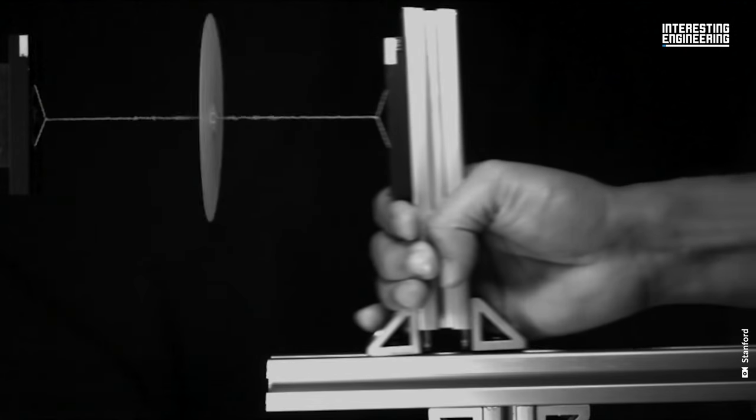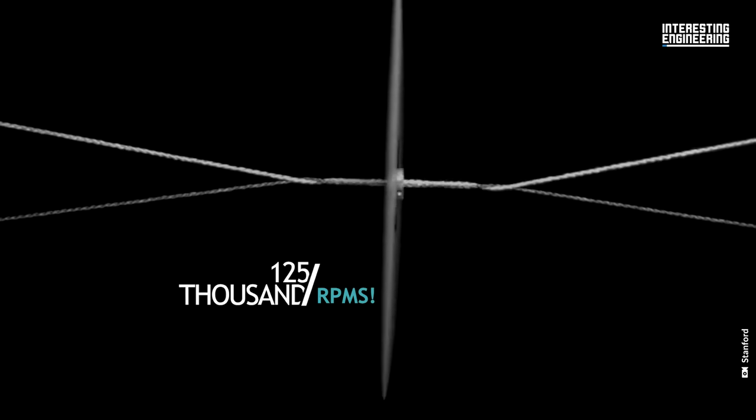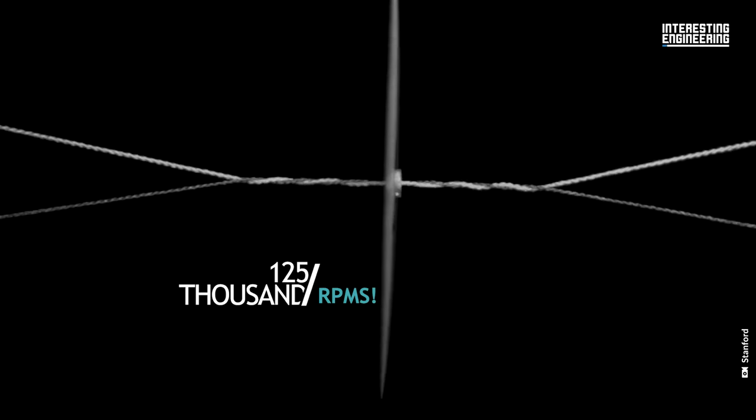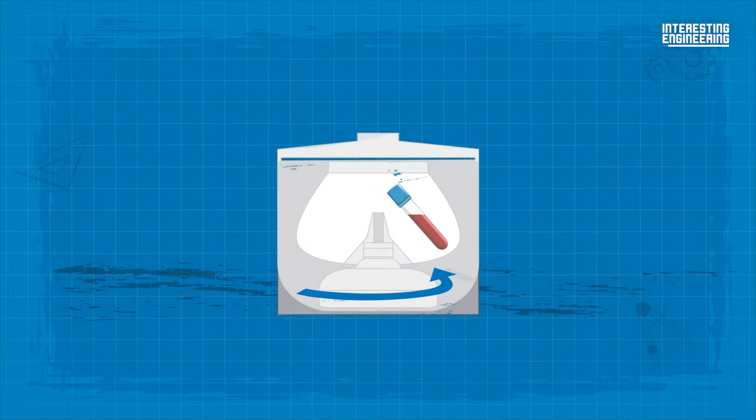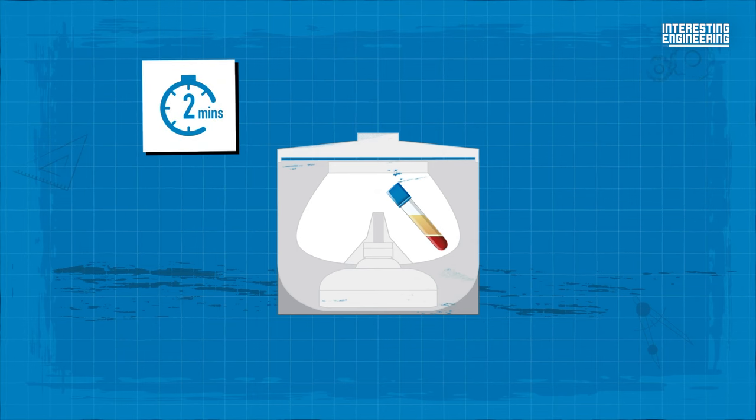A human-powered blood centrifuge that can reach speeds up to 125,000 RPMs. This device can separate blood plasma from red cells in less than two minutes, and you don't even have to plug it into the outlet.